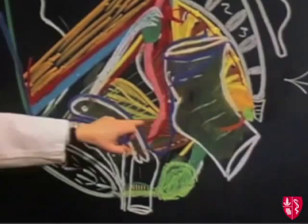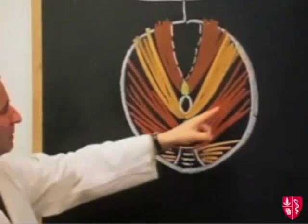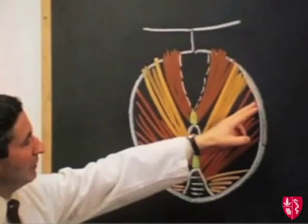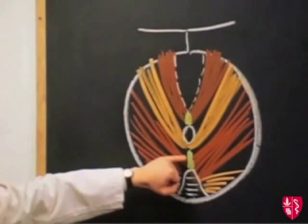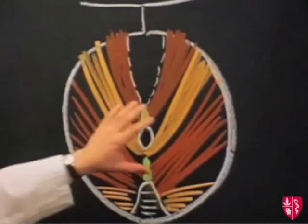Now the iliococcygeus fibers arise from the obturator internus fascia, and the fibers pass downwards and backwards, inserted into the anococcygeal body and into the coccyx. So the levator ani on either side is the most important structure which supports the viscera within the pelvic cavity in the female.